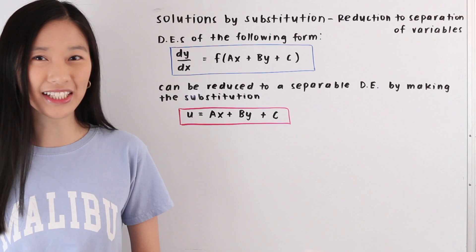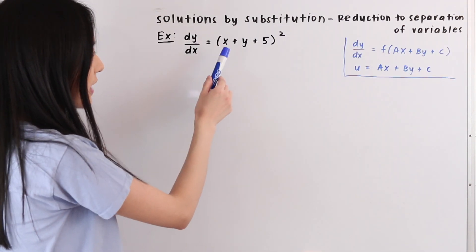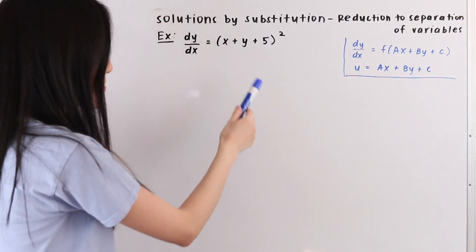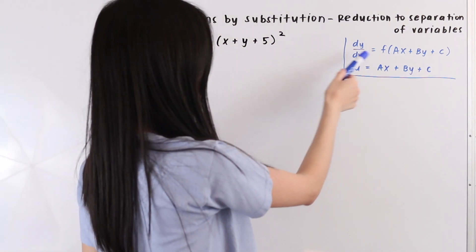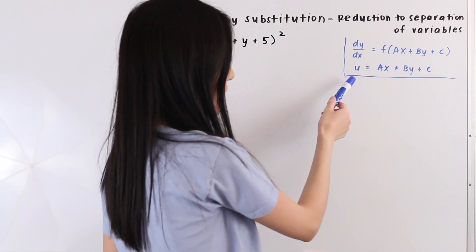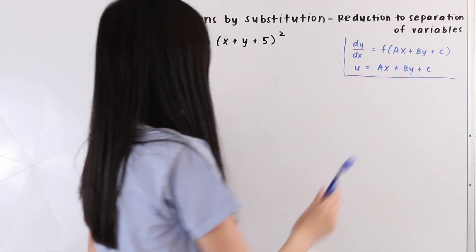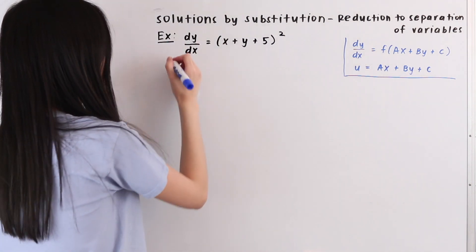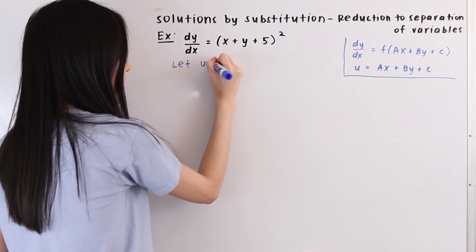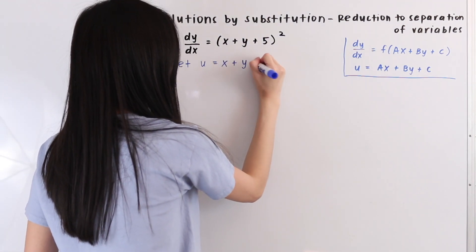So let's go ahead and apply this to an example. In this example we have dy/dx is equal to x plus y plus 5 squared. We have something of the form dy/dx is equal to f of ax plus by plus c, so we are going to substitute u is equal to ax plus by plus c into our differential equation. So let's let u equal x plus y plus 5.